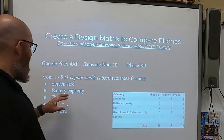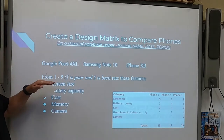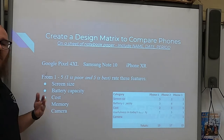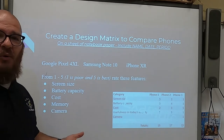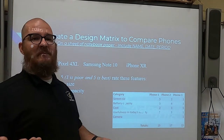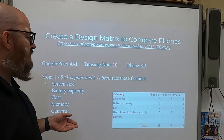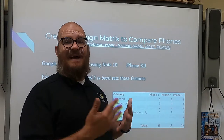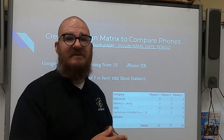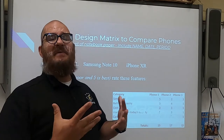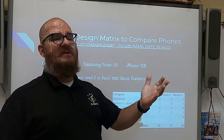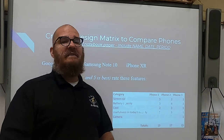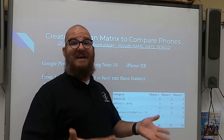You're going to rate each of these features with a one to a five — one being terrible, five being the best. At the end, you come up with the total which should help you narrow your design down. It should take out some of the guesswork and some of the bias, because someone might want to choose their idea instead of allowing the team to choose the best idea. Not everybody's going to have the best ideas.